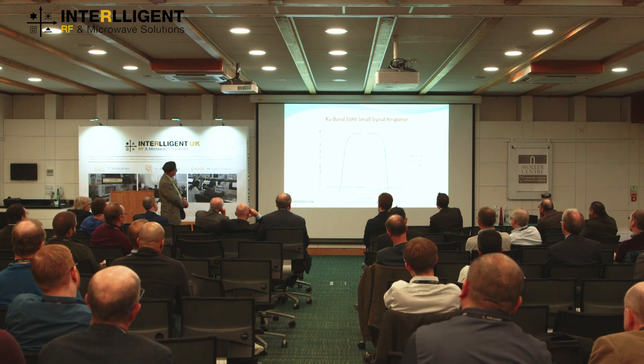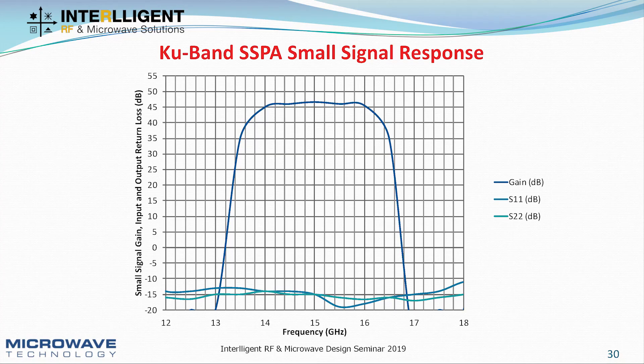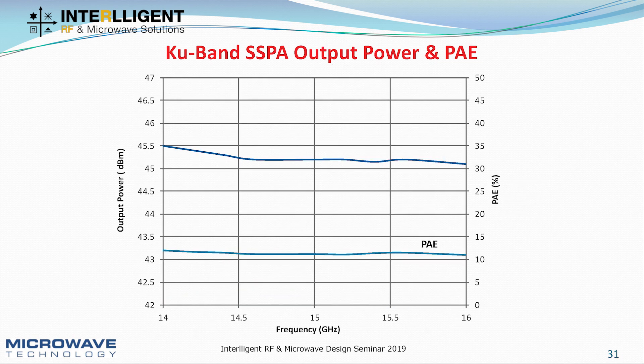The measured small signal response over 14 to 16 gigahertz was over 45 dBs, with input and output return loss better than 12 dBs. The measured saturated output power was greater than 45 dBm — around 30.5 watts minimum. The PAE was averaging around 12% over 14 to 16 gigahertz.